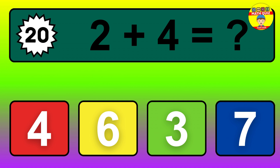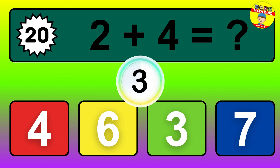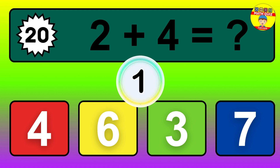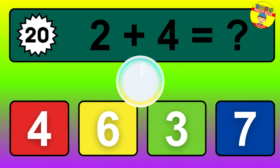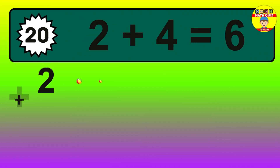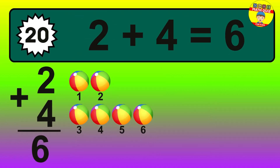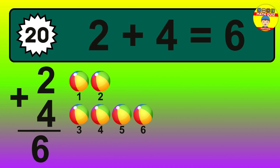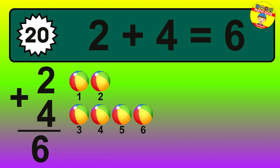Question 20. 2 plus 4 equals what? So the answer is 2 plus 4 is 6. Let's count it. 1, 2, 3, 4, 5, 6.